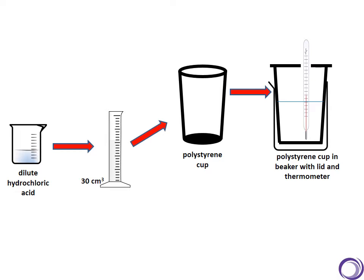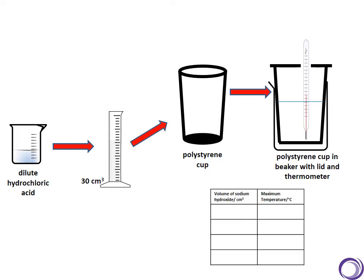We then need to take the temperature of the acid and record that in our table. So in this case, we're going to say that at zero centimeters cubed of sodium hydroxide, the temperature was 21 degrees centigrade.